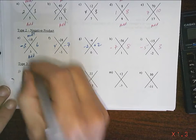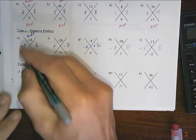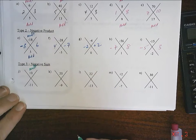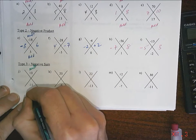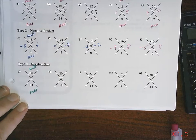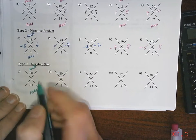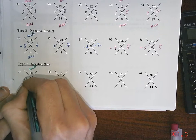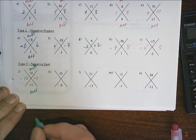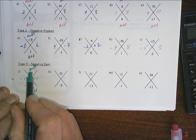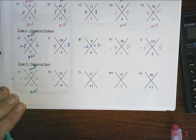And the last line that we have. We're going to be looking for a positive product but a negative sum. So, two numbers that multiply to 10 but add to negative 11. 10 and 1, both negative. Negative times negative gives positive. And when I add them, I get negative 11.